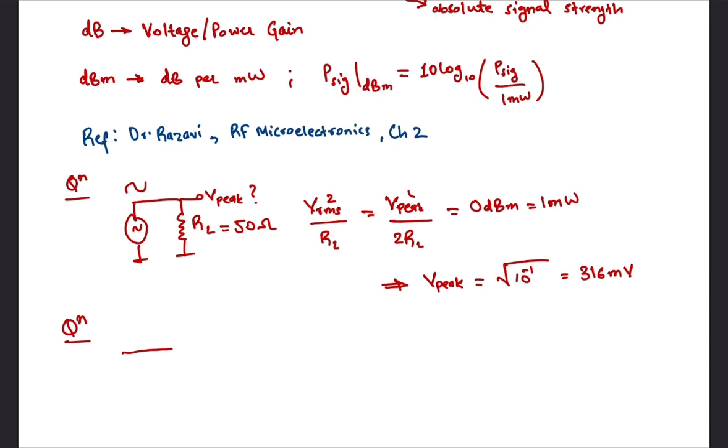Now let's discuss another example. Let's say you have a receiver which senses a minus 100 dBm signal which is then amplified by an amplifier in the front end by 15 dB.